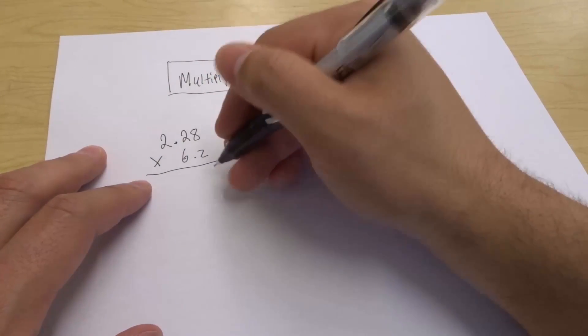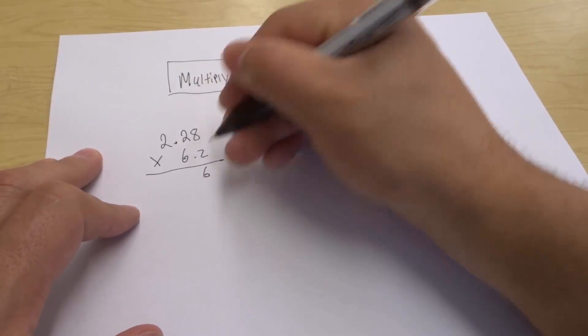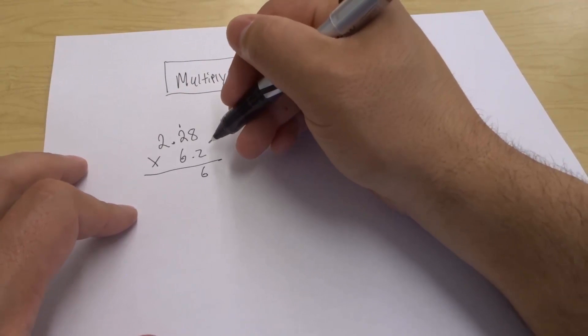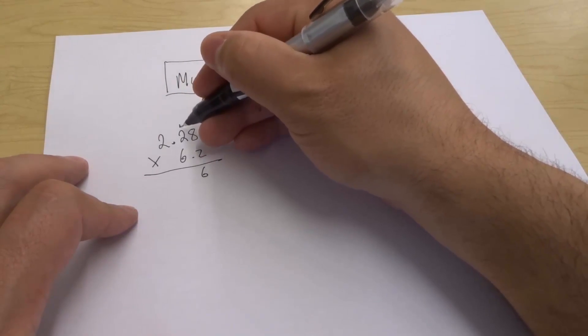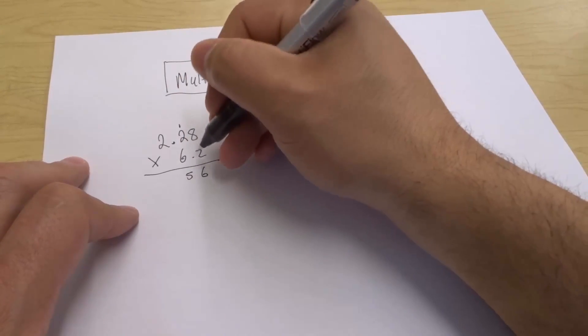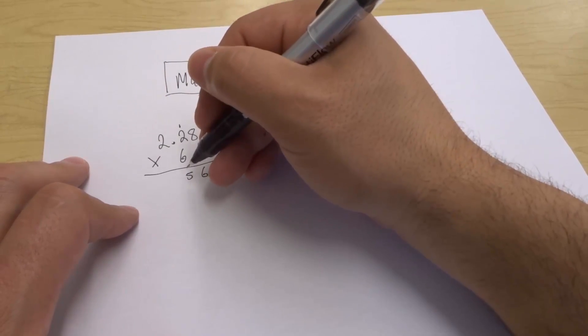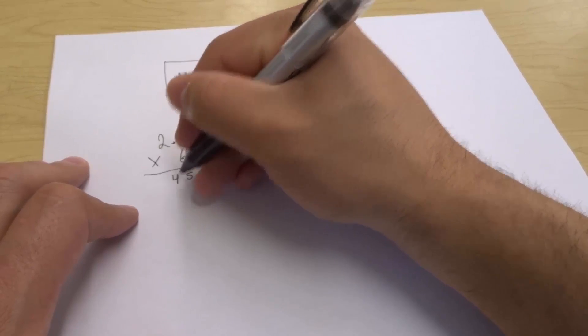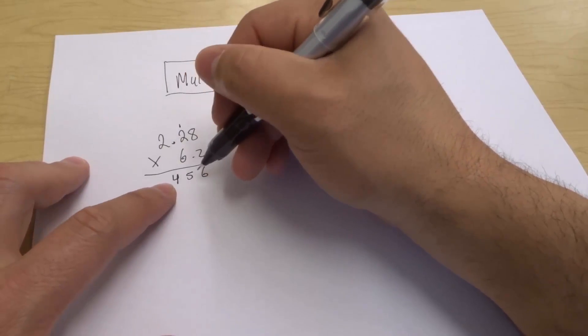We're going to do 2 times 8 is 16, so put the 6 down here and bring the 1 up there. 2 times 2 is 4 plus 1 gives us 5. 2 times 2 gives us 4. So we have 4, 5, 6 right here.